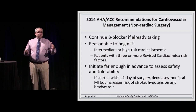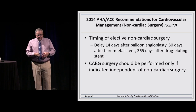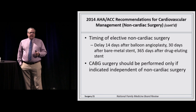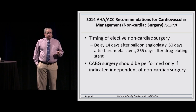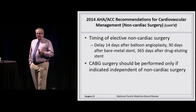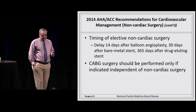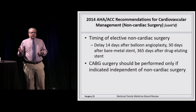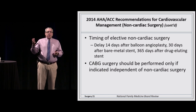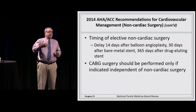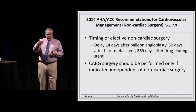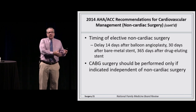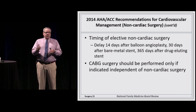You want to start the beta blocker far enough in advance for a good effect. Another recommendation: for patients who need surgery and also need a percutaneous intervention, delay elective non-cardiac surgery for 14 days after balloon angioplasty, 30 days after a bare metal stent, and 365 days after a drug-eluting stent. If a patient needs bypass surgery, only do it if the risk of the cardiac disease is greater than the risk of the surgery itself.